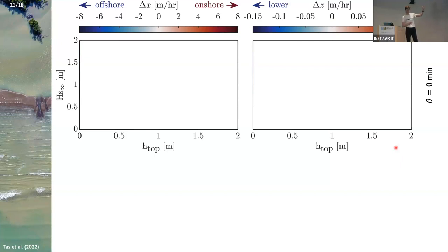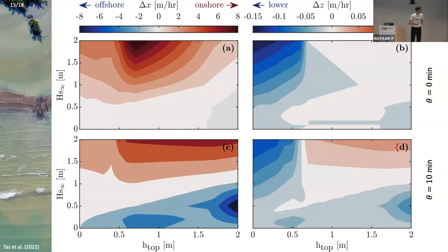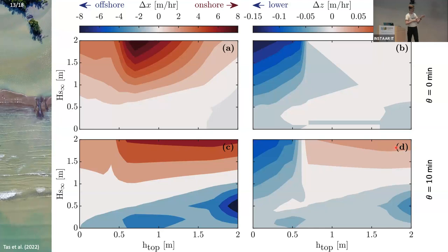All those different scenarios led to different values of delta x and delta z, stored in so-called migration matrices. The left plot shows horizontal displacement, the right shows vertical displacement. The horizontal axis is water level on top of the chenier, vertical axis is offshore wave height. Higher waves mean more onshore migration. Low water depth combined with high waves lowers the chenier crest — these were kind of expected results, but that was for a situation without the phase lag. If we include a phase lag of 10 minutes, now the horizontal displacements show that large water depth combined with relatively low waves causes the chenier to migrate offshore instead of onshore. We also see that for some situations the chenier crest actually heightens, so there's not only lowering.